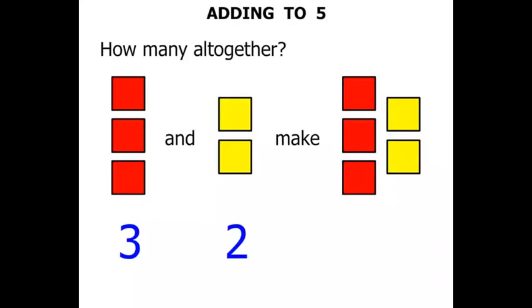So 3 and 2 make 5. Now we said the word 'and'. We're going to use the plus symbol, and that means we're going to add them together. And then they made the answer, the total. We're going to use the equal symbol for that. So we say that 3 plus 2 equals 5, and that is a number sentence.